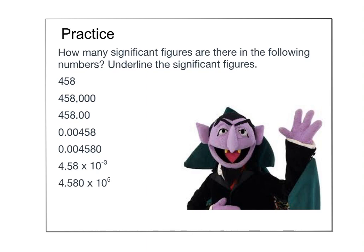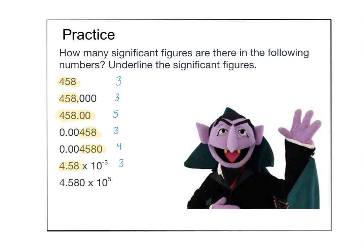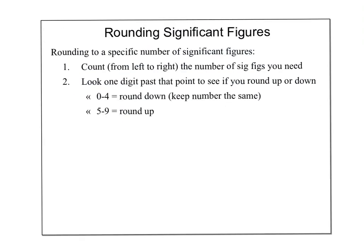Practice counting sig figs using either the rules or the Pacific/Atlantic trick. You can use non-zero integers, leading zeros, and trailing zero rules — for example, 4, 5, and 8 are always significant. Pause the video and try the practice problems, then check your answers. The blue numbers show how many sig figs each measurement has, and the highlighted digits show which ones are significant. Bring any questions to class.